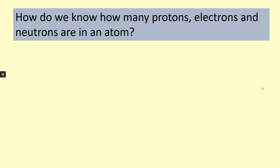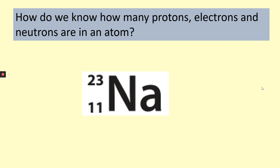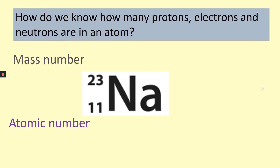But how do we know how many protons, electrons, and neutrons are actually in an atom? Let's look at sodium. You'll find all the elements in the periodic table, and each element has a nucleus symbol. The bottom number is the atomic number, and the top number is what we call the mass number. Our atomic number is the number of protons in an atom of that element. Every different element has a different number of protons — for example, sodium always has 11 protons, oxygen will always have 8 protons, and carbon will always have 6 protons. This number can never change.